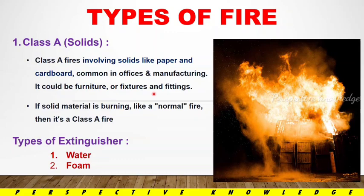In industry, most furniture is also wood, and that is Class A fire. If a solid material is burning like a normal fire, then it is a Class A fire — things like paper, cardboard, and similar parameters. For Class A fire, the kind of extinguisher we use is water and foam. We can use these to control and extinguish the fire. Extinguishers come in red color, and there are different types available.